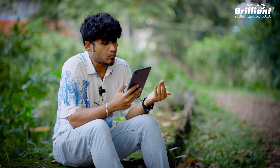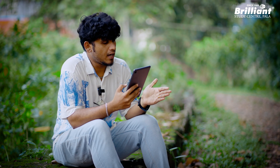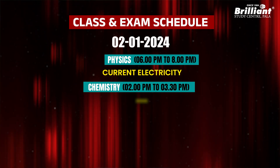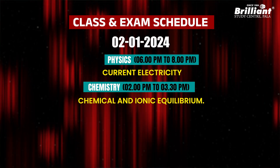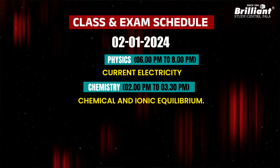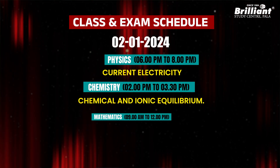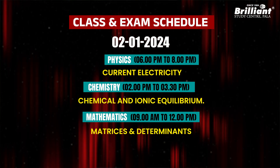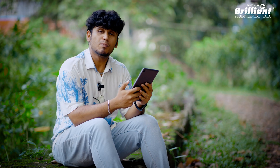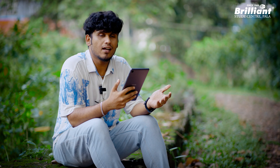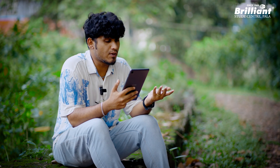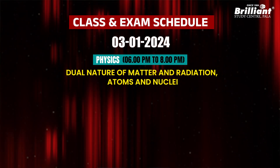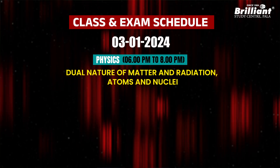On the 1st and 2nd, Physics covers Current Electricity; Chemistry covers Chemical and Ionic Equilibrium; Mathematics covers Matrices and Determinants. On the 3rd, Physics covers Dual Nature of Matter and Radiation, Atoms and Nuclei — Physics Unit 3.